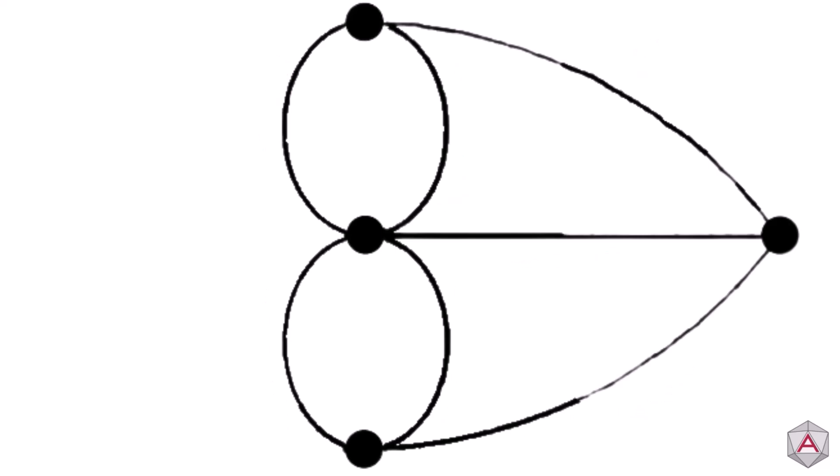However, no matter how we draw the graph, we will always be missing one edge. Feel free to pause the video and see if you can find an Euler path. You will quickly find that there isn't one.